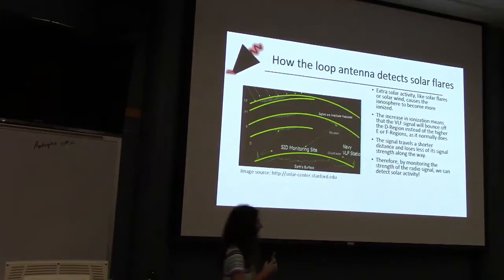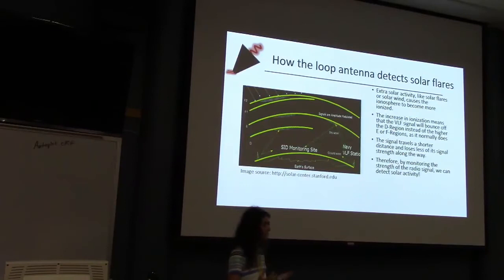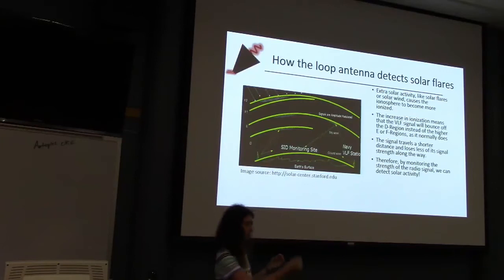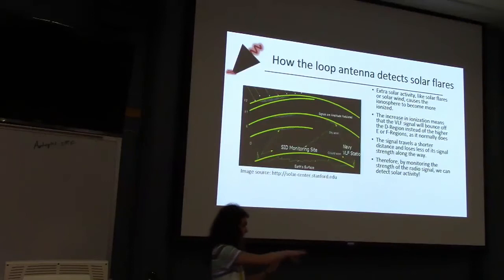The point of the loop antenna is to detect solar flares. When solar activity occurs and solar flares approach the Earth, it causes the upper atmosphere — the ionosphere — to become more ionized. This causes the very low frequency radio signal to bounce off a lower layer of the ionosphere than it normally would. Since it bounces off at a lower point, it doesn't travel as far to reach your receiver, which means you see a signal spike.